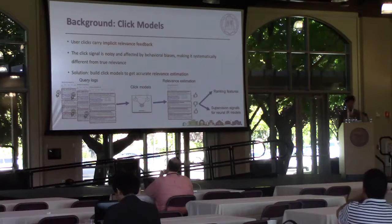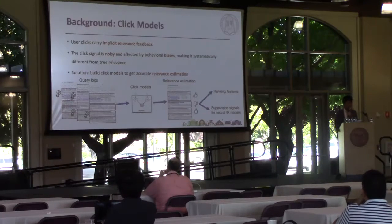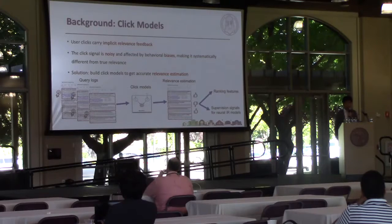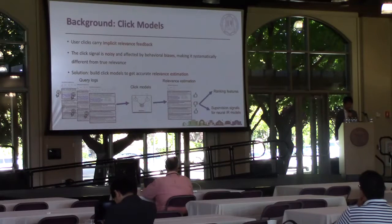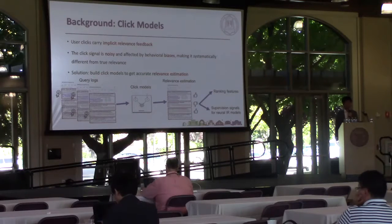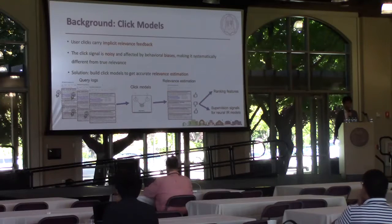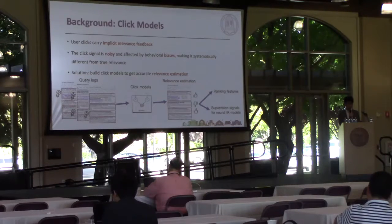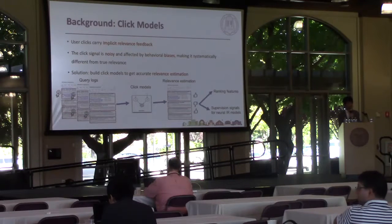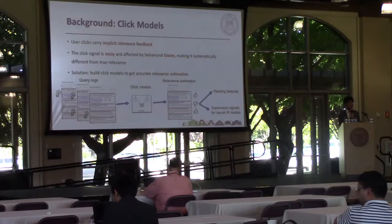First, let's see the background. We know that user clicks carry implicit relevance feedback that is valuable for improving the ranking performance of search engines. However, the click signal is noisy and often affected by different kinds of behavioral biases, making it systematically different from true relevance. To solve this problem, a variety of click models have been proposed to model the biases in click signals. By training the click models on query logs, you can get more accurate relevance estimation from those noisy and biased user clicks, and the relevance estimation can then be used as ranking features for learning-to-rank models or weak supervision to train data-hungry neural ranking models.